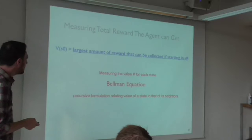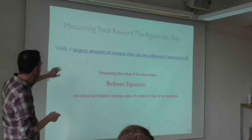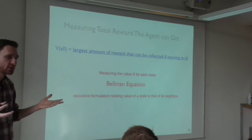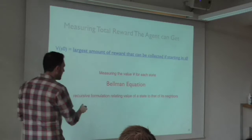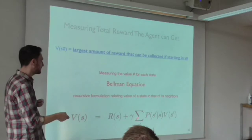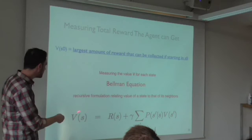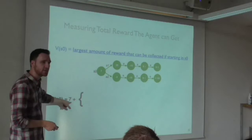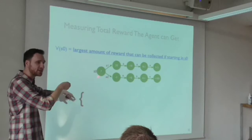Now, the value function: by definition, the value of a state is the largest amount of reward you can get if you start from that state. In a simple example you can calculate it by looking at all possibilities. There's something called the Bellman equation that lets you compute that value without complicated analysis. The value of a state is the reward you get at that state — for example, the value of S0's first term is the reward at S0.